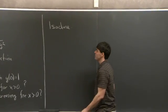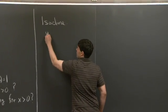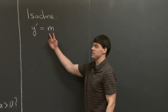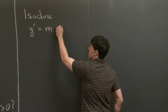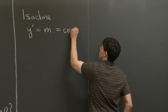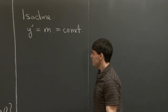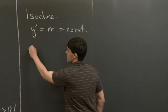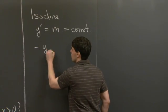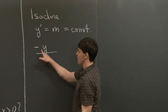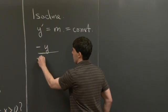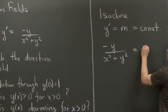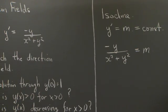So what is an isocline? Well, it's a curve where the derivative y prime is equal to m, which is some constant. So what are the isoclines for this differential equation? Well, it would be minus y divided by x squared plus y squared equals m.